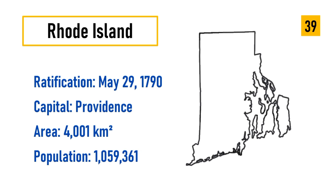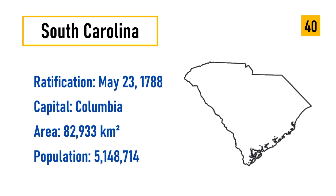Number 39: Rhode Island, ratification May 29, 1790, capital Providence, area 4,001 square kilometers, population 1,059,361. Number 40: South Carolina, ratification May 23, 1788, capital Columbia, area 82,933 square kilometers, population 5,148,714.